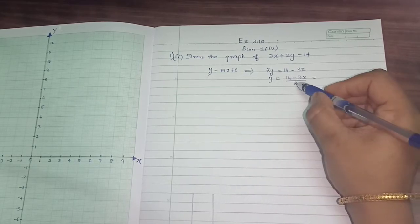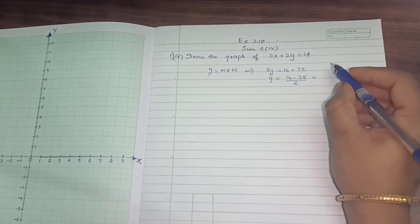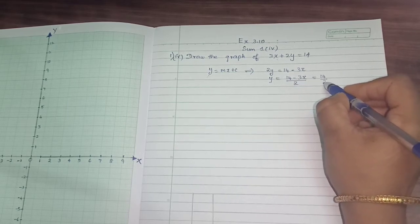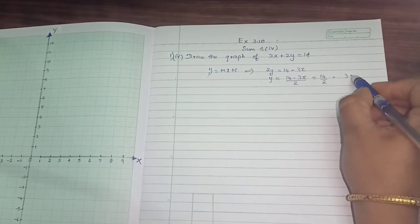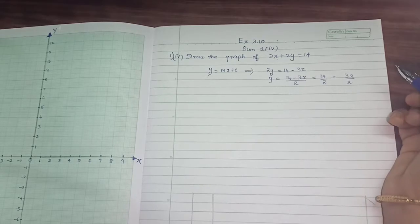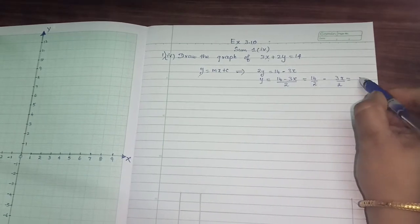Next, what we have to do is, this denominator is common in both the terms on the numerator. So I am splitting the terms like this: 14 by 2 minus 3x by 2. Now, what is 14 by 2? 7, right?